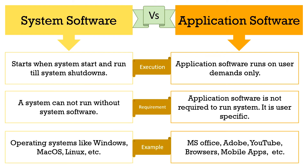The examples of system software are operating systems like Windows, MacOS, Linux, etc. The examples of application software are MS Office, Adobe, YouTube, Browser, Mobile Apps, etc.